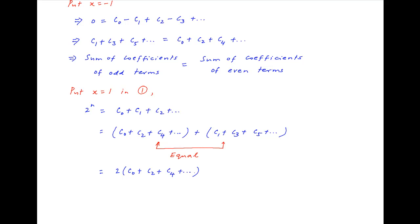Dividing by 2, we get C0 + C2 + C4 + ..., which is the sum of the coefficients of the even terms, equal to 2^n / 2, which equals 2^(n-1). This is the required result.